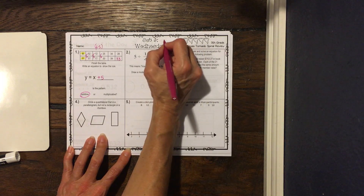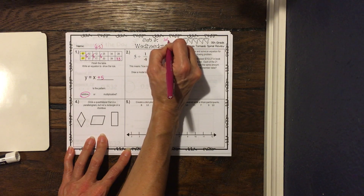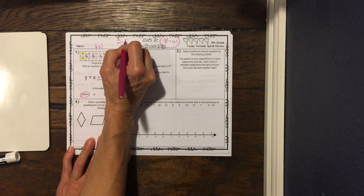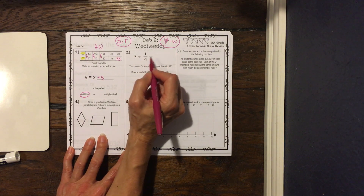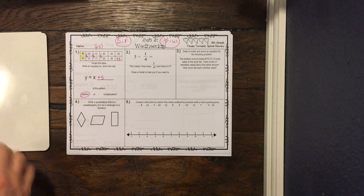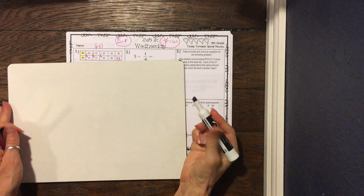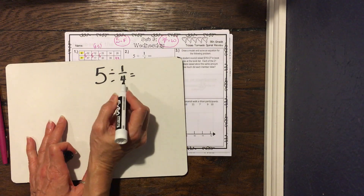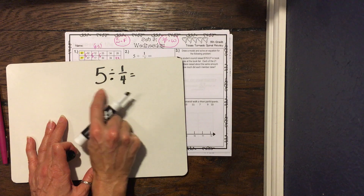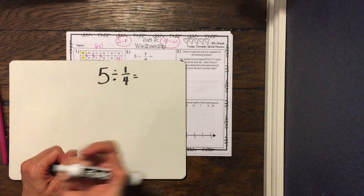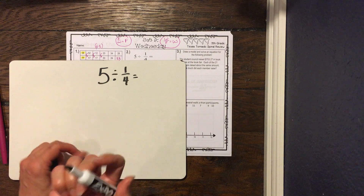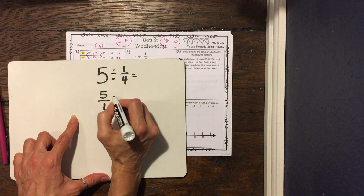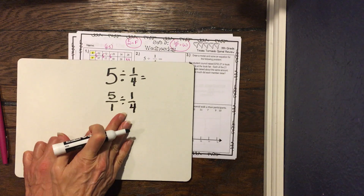Number 2: we have 5 divided by 1/4. Remember the pattern — whole divided by fraction always gives us a whole number, and fraction divided by whole always gives us a fraction. So we know our answer will be a whole number. Let's do the math first, then match the model. We have 5 divided by 1/4. We can't divide fractions, so first we change the whole number 5 into a fraction by putting a 1 underneath, rewriting it as 5/1 divided by 1/4.